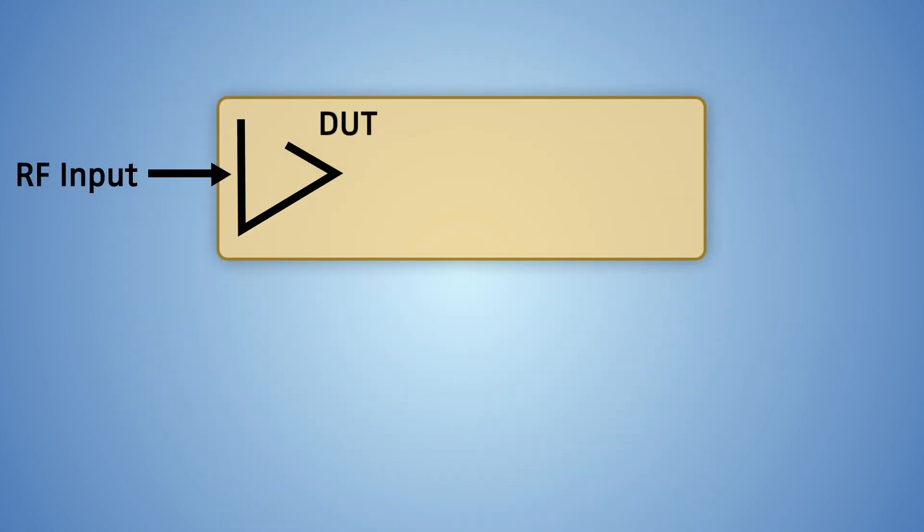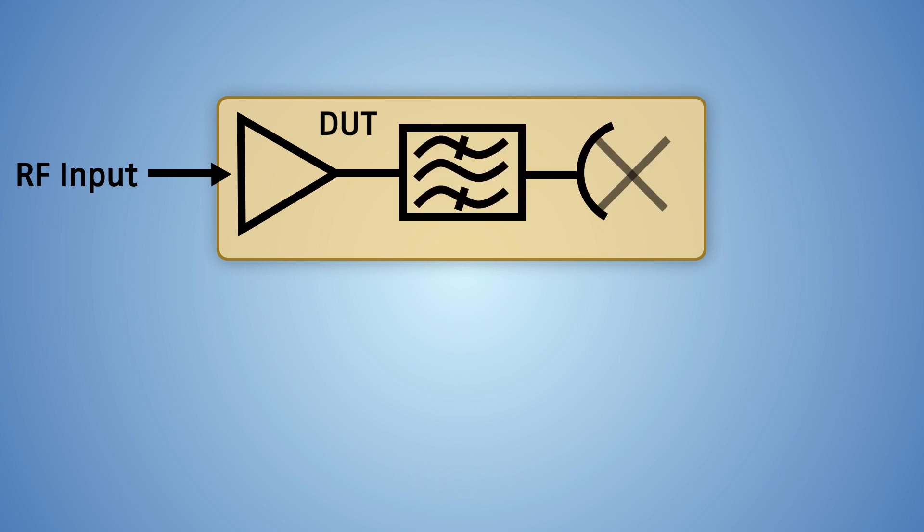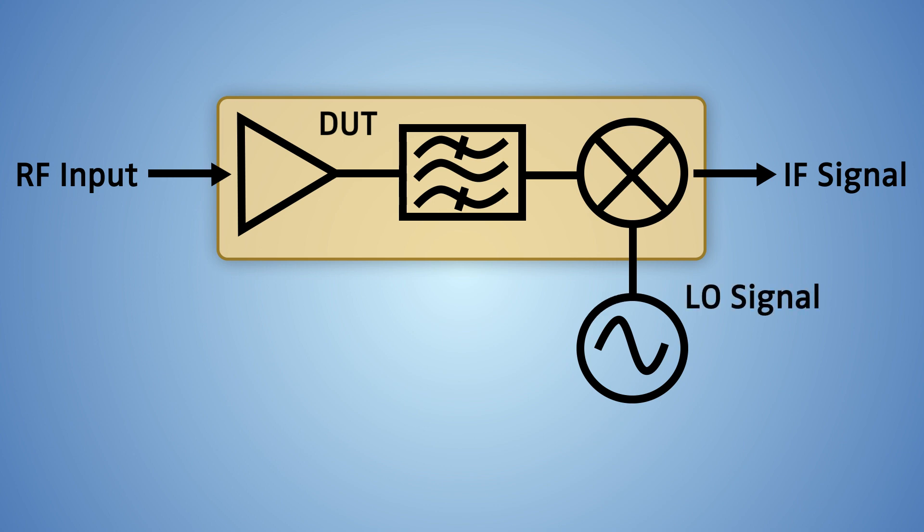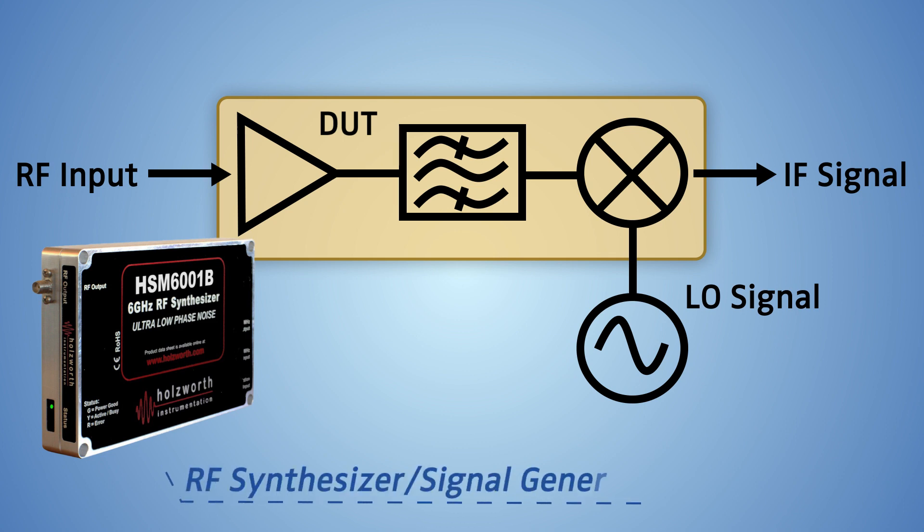A radar system's local oscillators may generate enough phase noise to mask radar returns that are close to the initial transmit frequency. In this case, a high-performance synthesizer or signal generator can be used in place of the LO. Substituting the system LO with a cleaner signal puts the LO's performance to the test, enabling engineers to determine its phase noise impact.